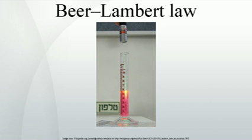Beer–Lambert law in the atmosphere. This law is also applied to describe the attenuation of solar or stellar radiation as it travels through the atmosphere. In this case, there is scattering of radiation as well as absorption. The Beer–Lambert law for the atmosphere is usually written where each term is the optical depth whose subscript identifies the source of the absorption or scattering it describes: aerosols that absorb and scatter; uniformly mixed gases, mainly carbon dioxide and molecular oxygen, which only absorb; nitrogen dioxide mainly due to urban pollution; Rayleigh scattering from molecular oxygen and nitrogen responsible for the blue color of the sky; water vapor absorption; and ozone, absorption only. Other absorbers can include formaldehyde, glyoxal, and a series of halogen radicals.